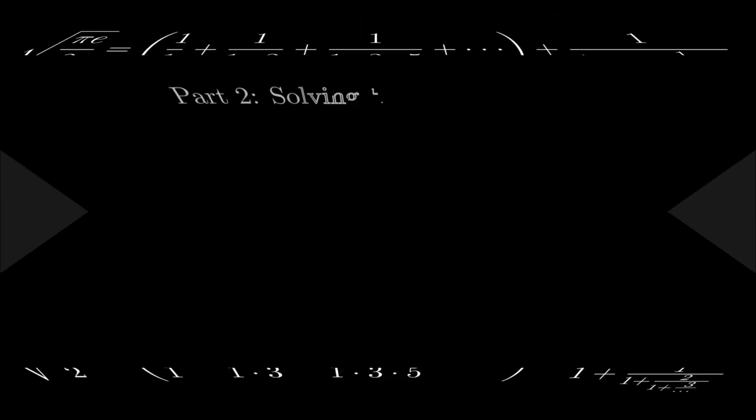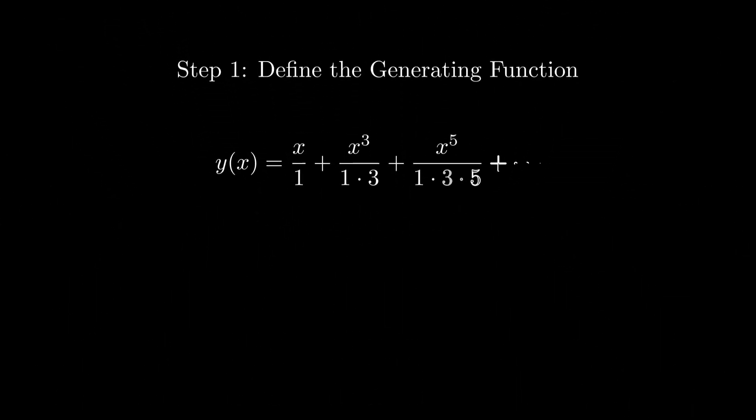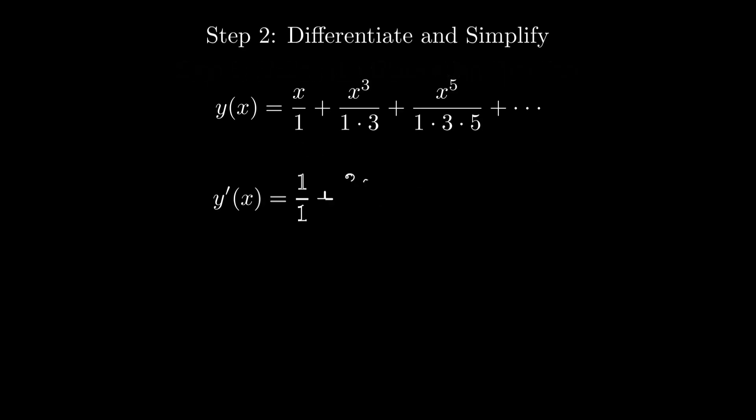Let's begin by solving the infinite series. We define a generating function y(x) equal to x plus x cubed over 1 times 3 plus x to the fifth over 1 times 3 times 5, and so on. Taking its derivative, we get y prime equals 1 plus 3x squared over 1 times 3 plus 5x to the fourth over 1 times 3 times 5, and so on.